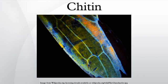Fossil record: chitin was probably present in the exoskeletons of Cambrian arthropods such as trilobites. The oldest preserved chitin dates to the Oligocene, about 25 million years ago, comprising a scorpion encased in amber.